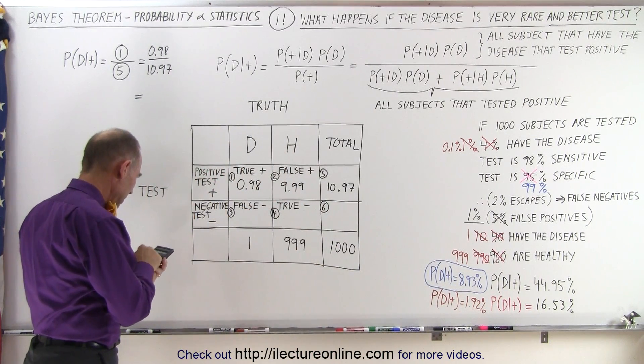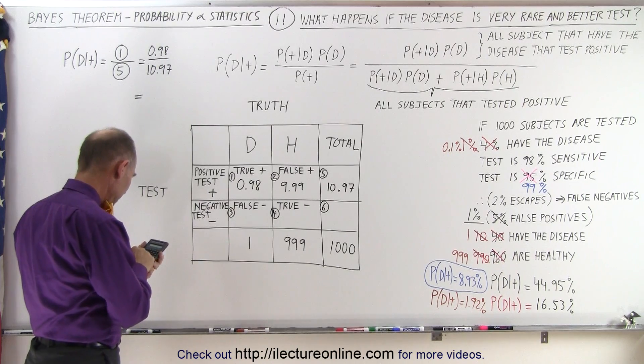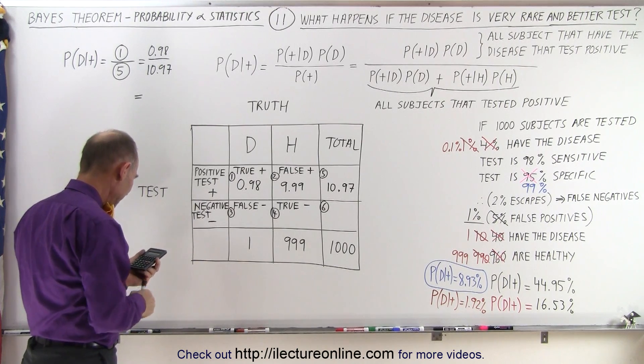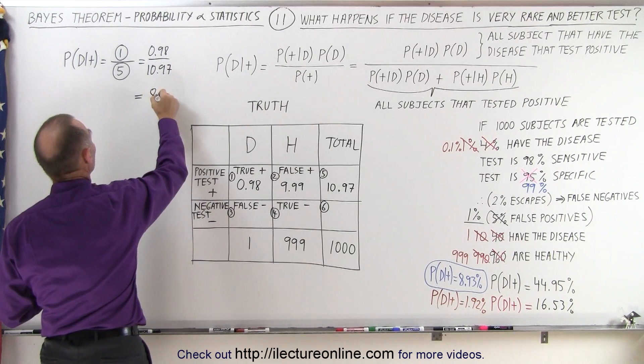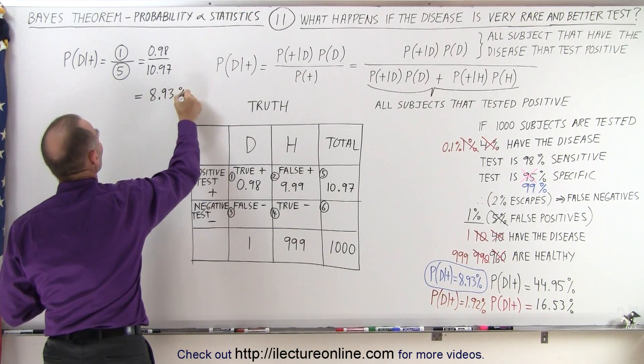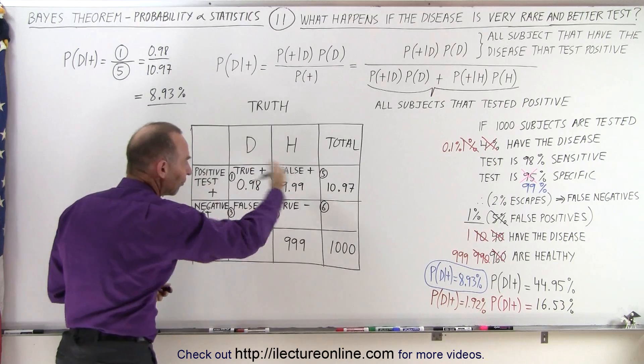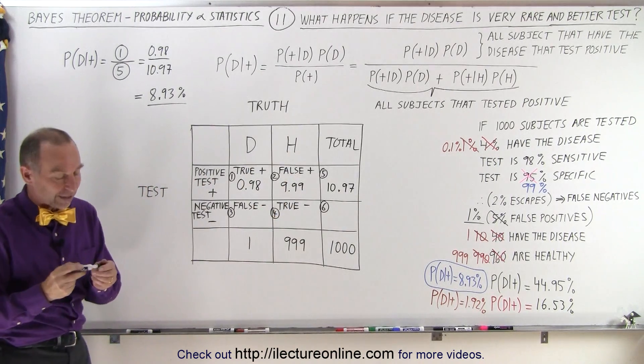So we take 0.98 and divide it by 10.97, and we get 8.93, just as expected. 8.93%. So you can see that we can use the table format and it gives you the exact same result.